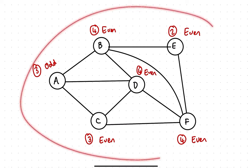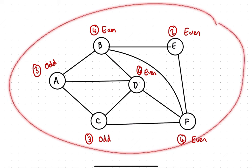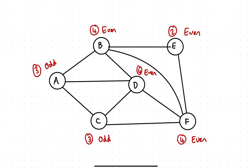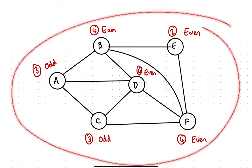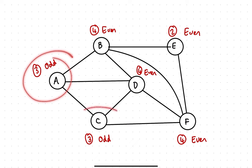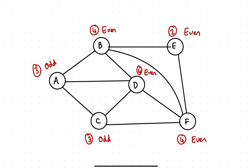So in this diagram, not every node is even. We've got two odd nodes — A and C. If every node were even, it would still be fully traversable. But this time we've got exactly two odd nodes, which means the diagram is what we call semi-traversable.